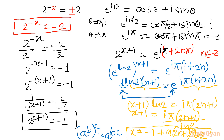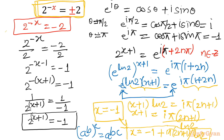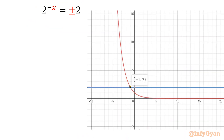This is one form of the complex solution. To summarize, for the equation 2 raised to the power negative x equal to plus or minus 2: the real solution is x equal to negative 1, and the complex solution is x equal to negative 1 plus i pi times 2n plus 1 over ln 2, where n belongs to the integers. Substituting integer values of n gives infinitely many complex solutions.